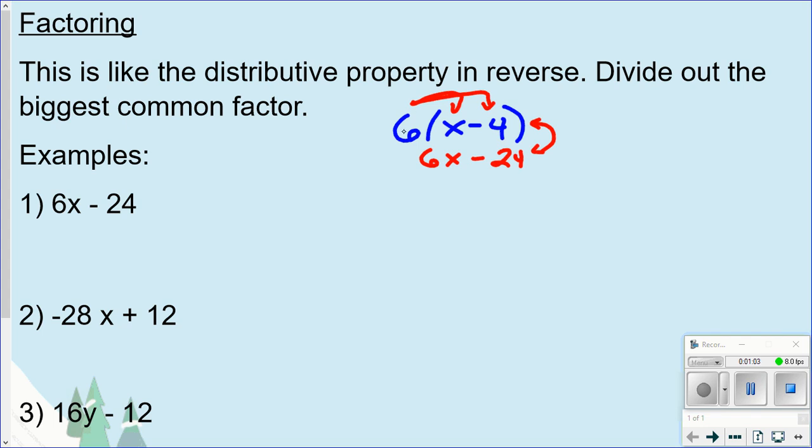So instead of multiplying something in, we're going to divide something out. What you're going to look for is the greatest common factor of the two, or could be more than two, elements in here, and you're going to divide that out. So here we go, here's the first one. What's the greatest common factor of 6 and 24? Well, that would be 6, so what I'm going to do is divide a 6 out.